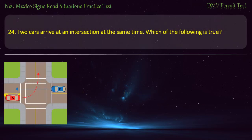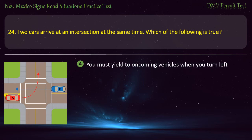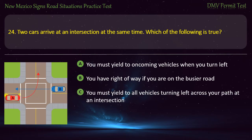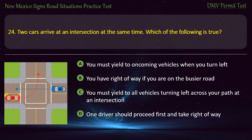Question 24. Two cars arrive at an intersection at the same time. Which of the following is true? Options: You must yield to oncoming vehicles when you turn left; you have right-of-way if you are on the busier road; you must yield to all vehicles turning left across your path; or one driver should proceed first and take right-of-way. Answer: You must yield to oncoming vehicles when you turn left.